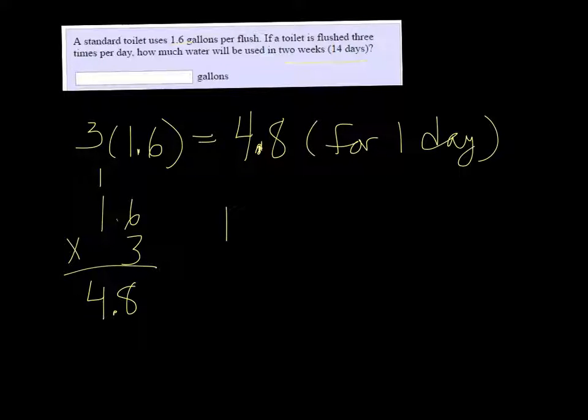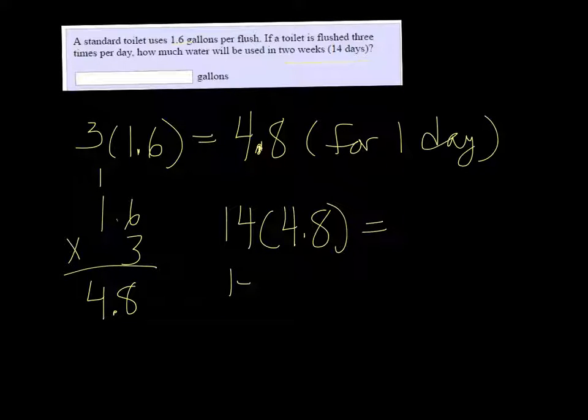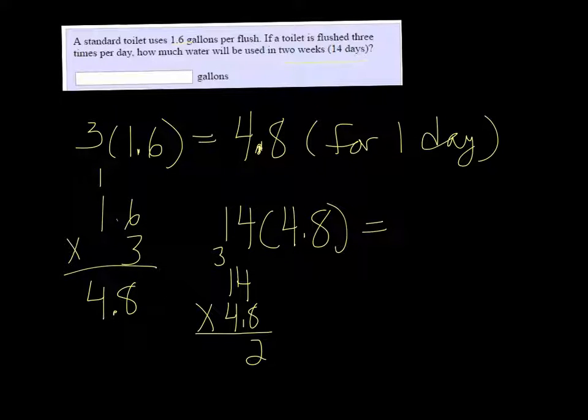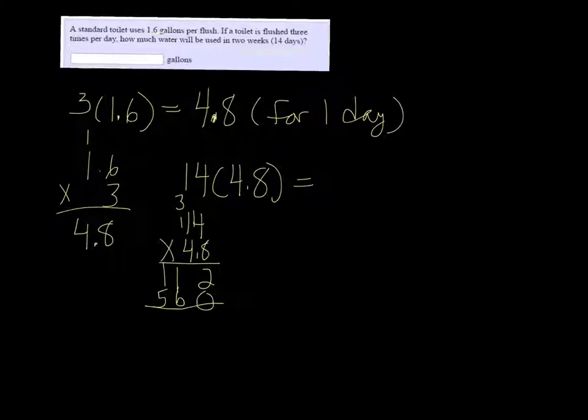For 14, we would have to multiply by 14. So 14 times 4.8. Let's do that out. So 4 times 8 is 32. And then 1 times 8 is 8, plus 3 is 11. Put a 0 here. 4 times 4 is 16, carry the 1. And 1 times 4 is 4, plus 1 is 5. So if we add that up, let me squish things so I have room.